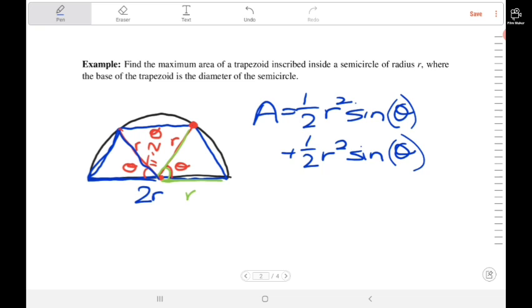And then we have the third triangle in the middle, which is again one-half r squared, but this time it's sine of pi minus 2 theta.